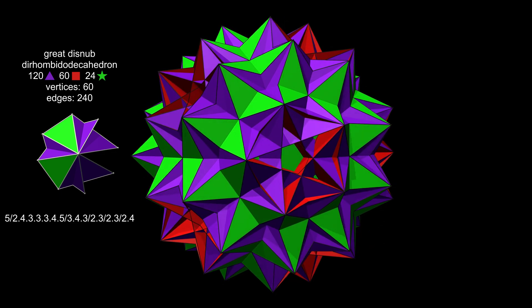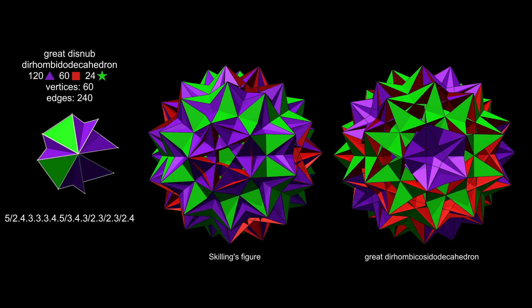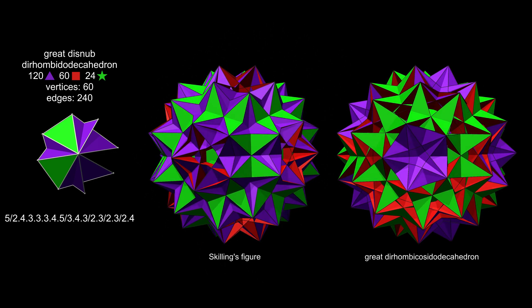It's very closely related to the Great Dirhombicosidodecahedron, the Miller's monster that concluded part four.